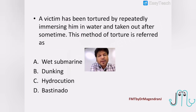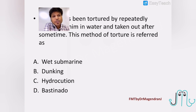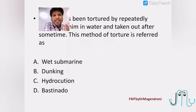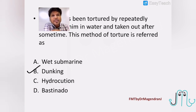A victim has been tortured by repeatedly immersing him in water and taken out after some time. This method of torture is referred to as — there might be confusion between wet submarine and dunking. Wet submarine is where the head alone is immersed in the water, whereas dunking is when the whole body, the whole victim, is immersed in the water. Since the question mentions the person is immersed in the water without specifying head alone, dunking is the better option.